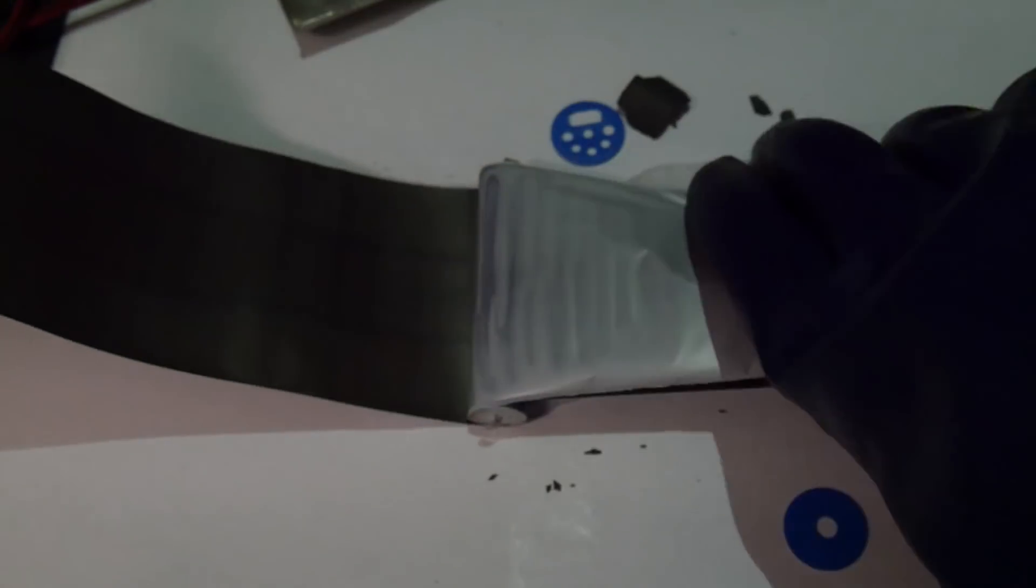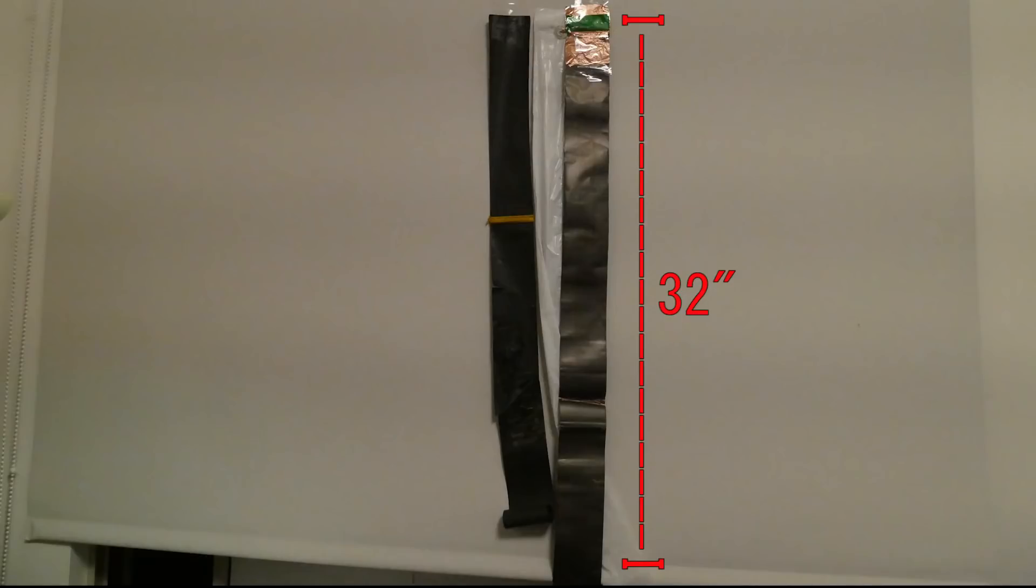In total, the jelly roll is about roughly 32 inches long. What this means is that the Tesla Model 3 cells do indeed have 30% more energy density than the Tesla Model S cells, which have jelly rolls roughly 24 inches long.